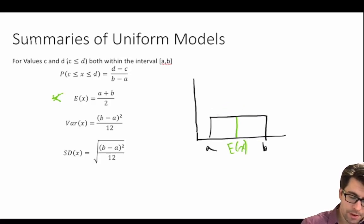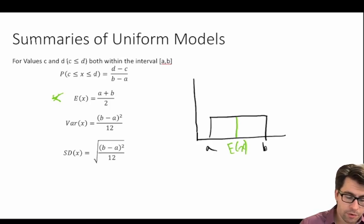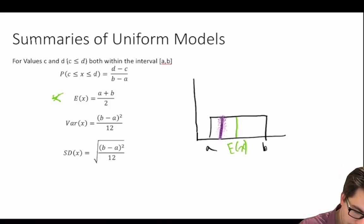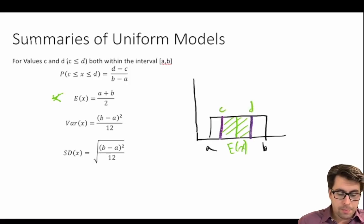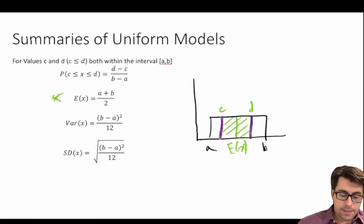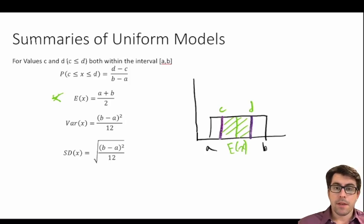One more important formula: when looking for the probability that x occurs between values c and d, the probability that c ≤ x ≤ d is equal to d minus c divided by b minus a.